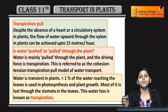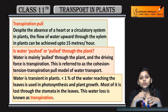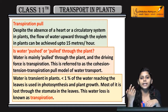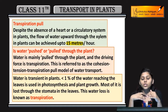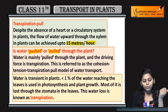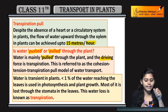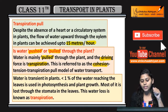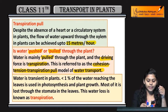Coming to the transpiration pull — plant mein upward movement root pressure ki wajhe se hoti hai, but in tall trees jo responsible hai upward movement of water and minerals ke liye, that is transpiration pull. Around 15 meters water travel kar sakta hai within plant within one hour. Ab question hai water push hota hai ya pull hota hai — water is mainly pulled through the plant, and the driving force is transpiration. This is referred to as the cohesion tension transpiration pull model of water transport.